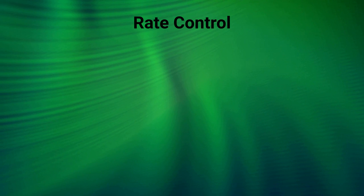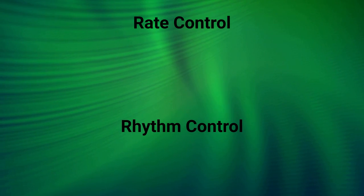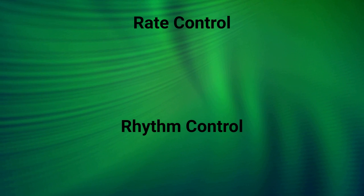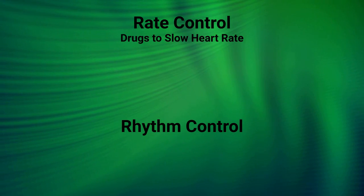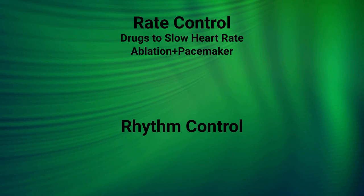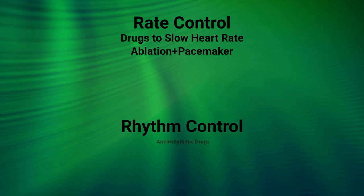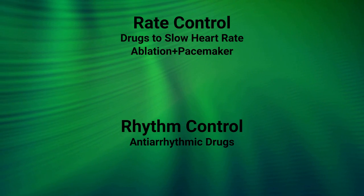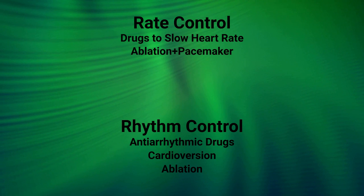Another key decision in treating patients is whether to institute rate control, to decrease heart rate, or to do rhythm control to achieve and maintain normal heart rhythm. A rate control strategy uses drugs that slow the heart rate; severe cases with persistent tachycardia may need catheter ablation with pacemaker placement. A rhythm control strategy uses either antiarrhythmic drug therapy, electrical cardioversion, catheter ablation, or a surgical procedure.